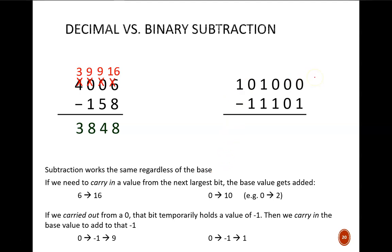Although this works in binary, we run into the situation of borrowing from a zero all the time. Let's look at this example. The rightmost column shows 0 minus 1. We need to carry into this column, which adds 2 — because we are in binary, and 2 is written as 1,0. To make that carry happen, we took away a 1 from the next column, so it temporarily holds a negative 1. Carrying into that column adds 2, so the negative 1 is now positive 1. The same procedure is repeated multiple times throughout this example.